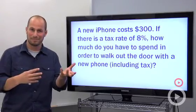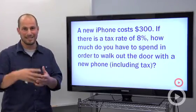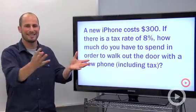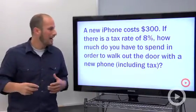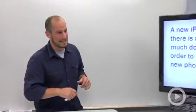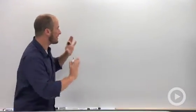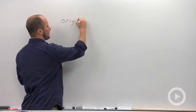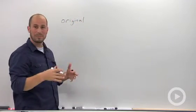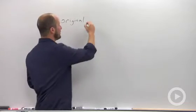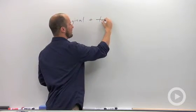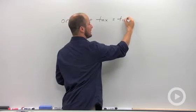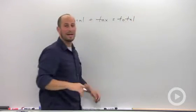How tax works is you buy something and then you have to pay a certain amount of tax on it. The government takes that and does whatever they do with it, and then you walk out with your new toy. You're basically paying for two things: your original item, whatever that retail value is, and then you're also paying your tax rate.